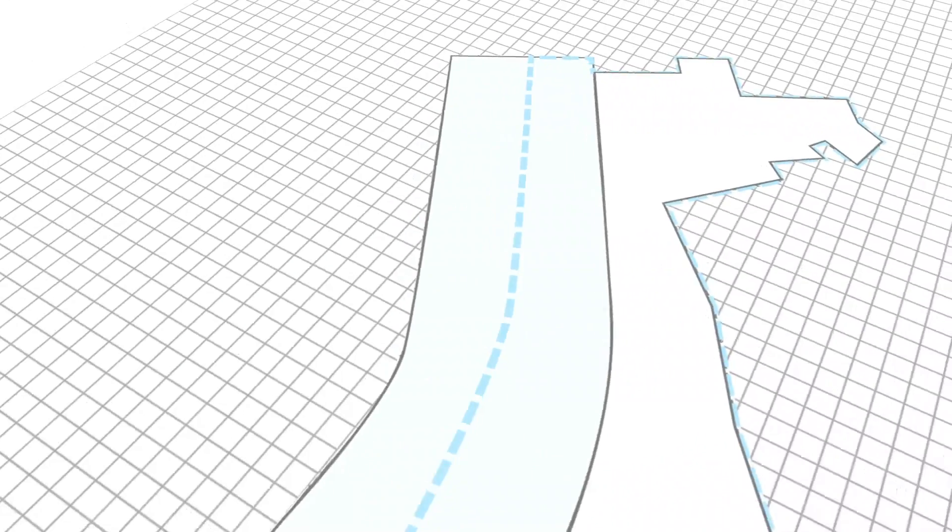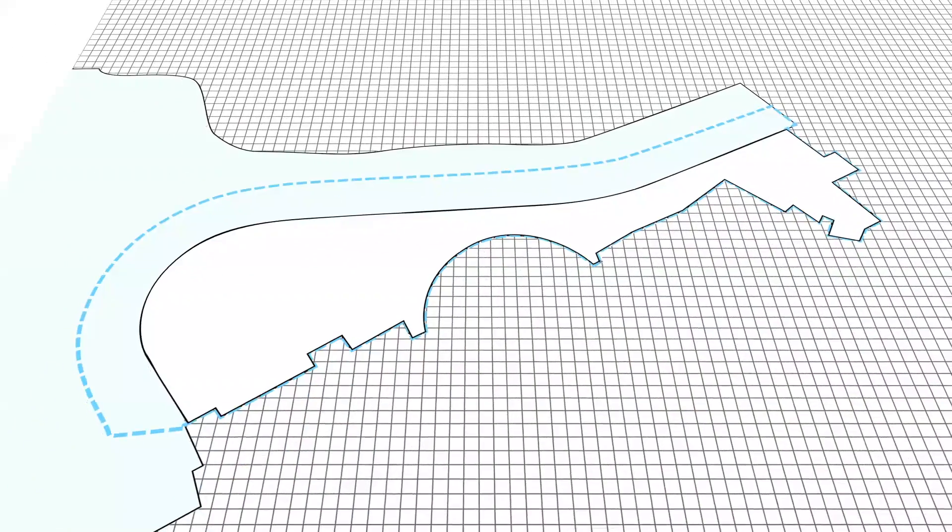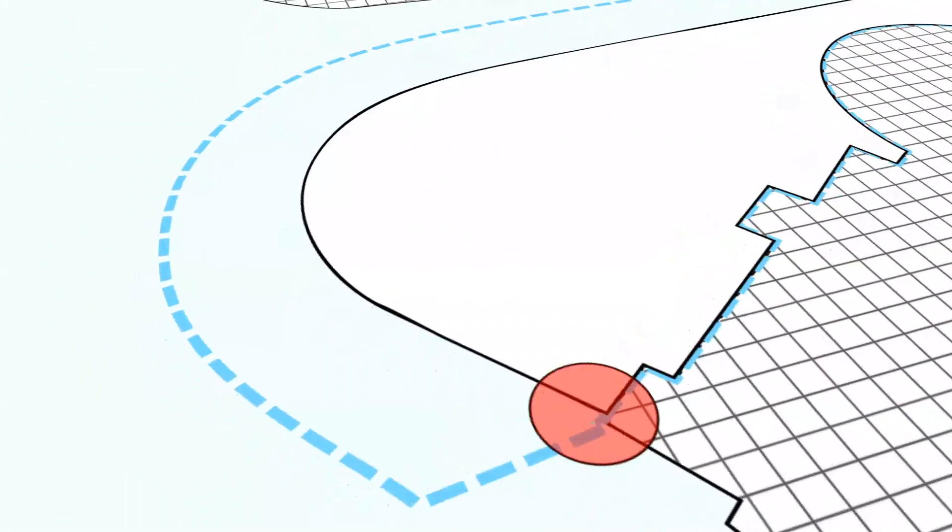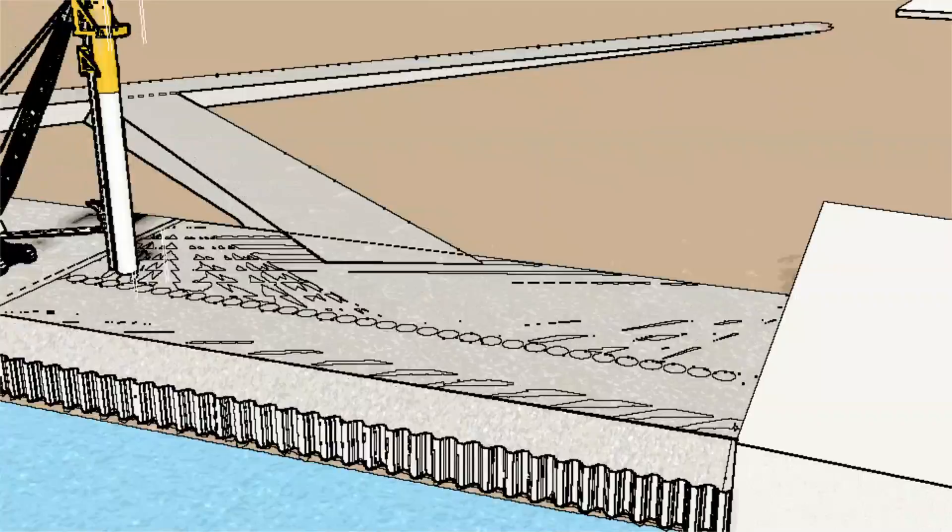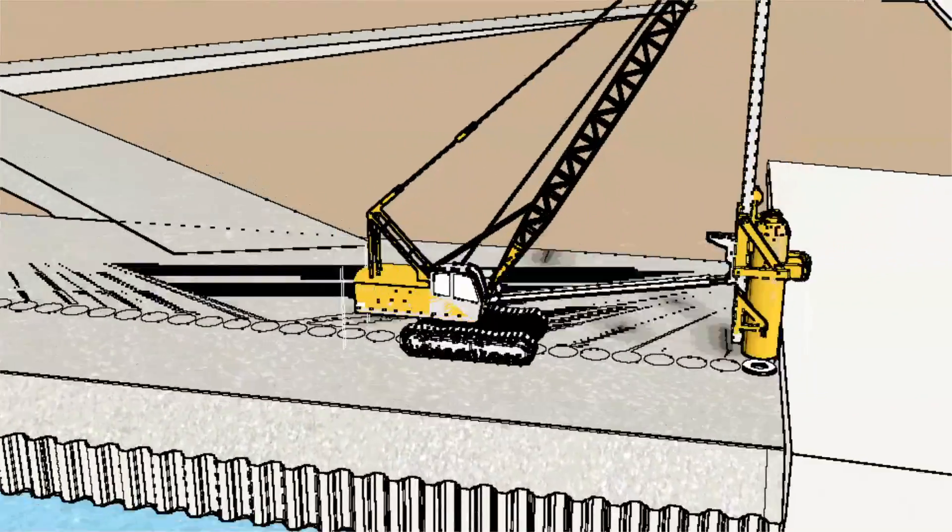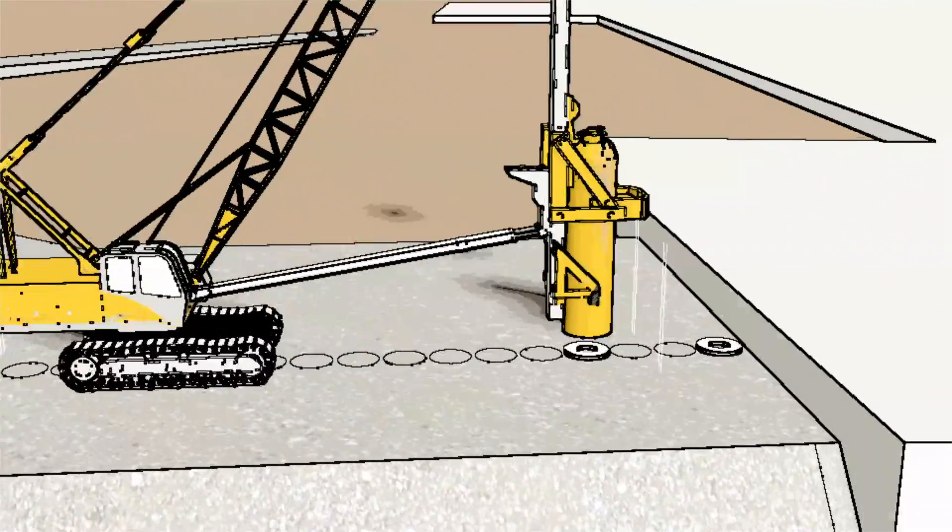Once the temporary bunds are ready to receive the permanent works, i.e. piling, these will also begin simultaneously from both South and North ends, and works will be similar in sequence.